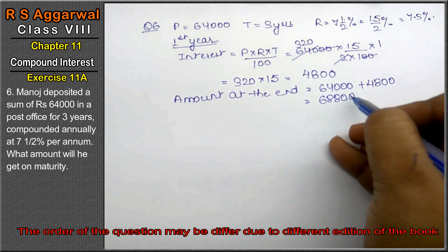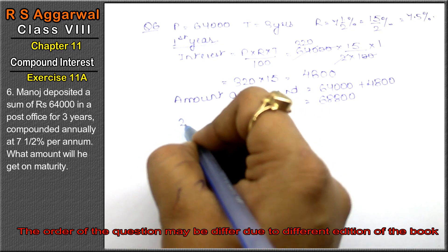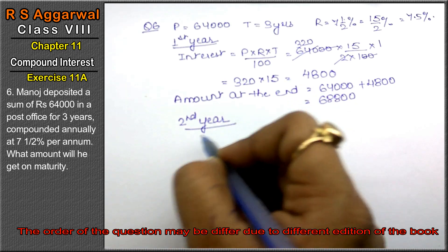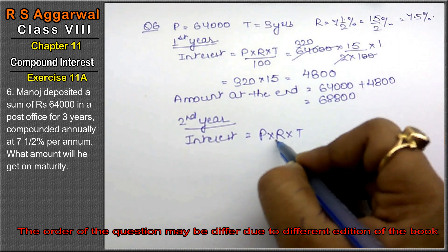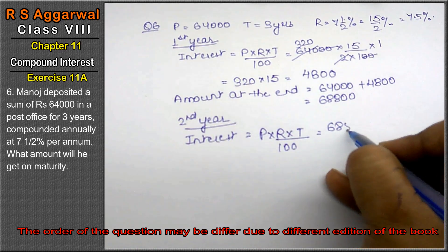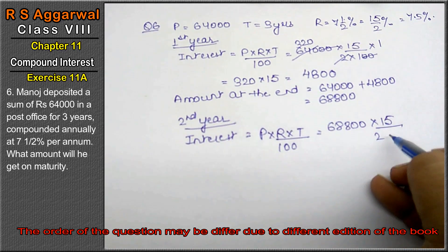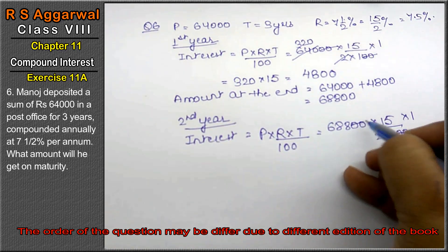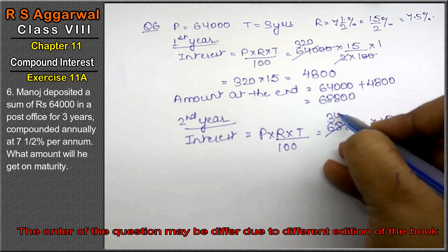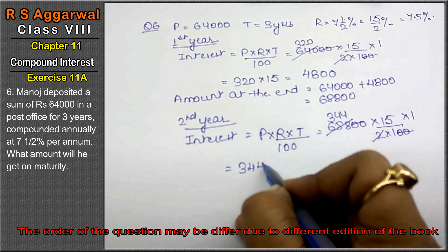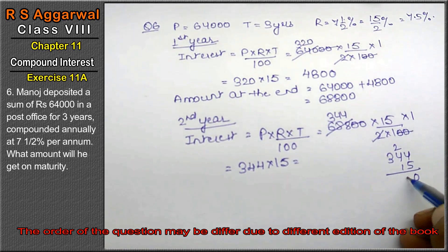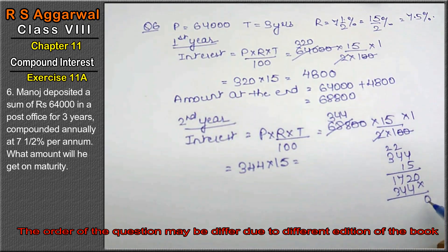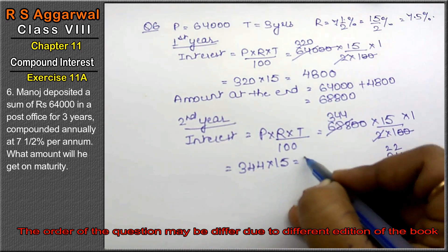Second year: we find the second year's interest. Interest equals P into R into T upon 100. P is now 68,800, R is 15 upon 2, T is 1. After cancellation and multiplication, the interest comes to 5,160.